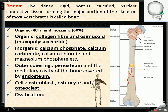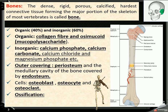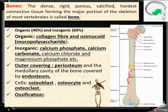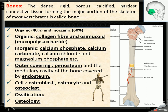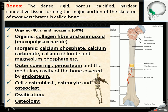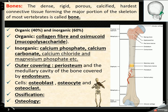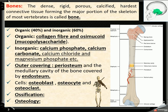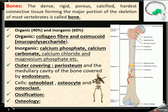Then ossification — what is ossification? The formation process of bone is called ossification. And osteology — what is osteology? The branch of biology that describes bone in detail is called osteology. The Greek word osteo means bones, and logos means knowledge.